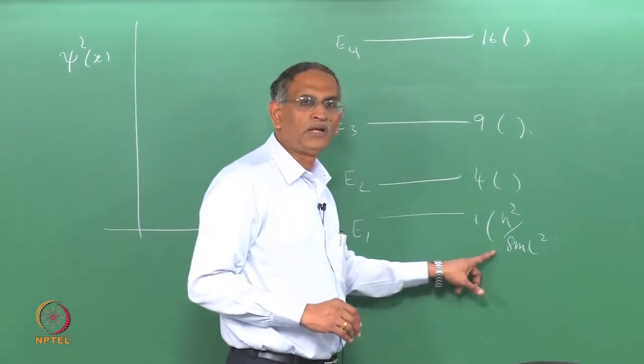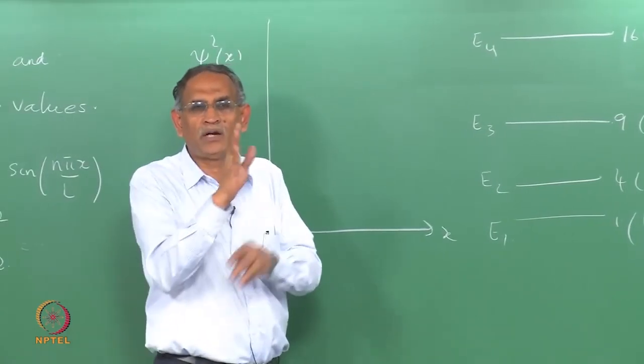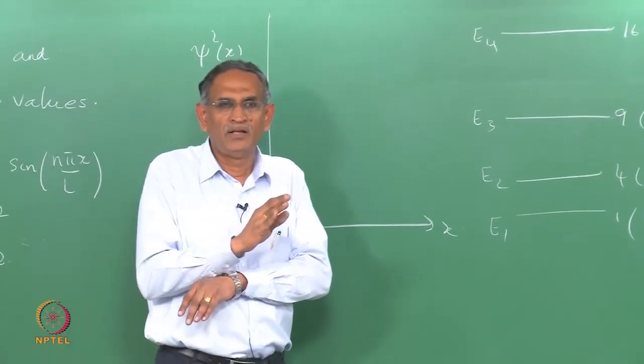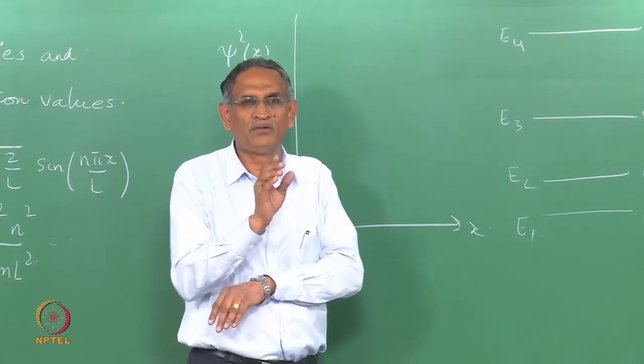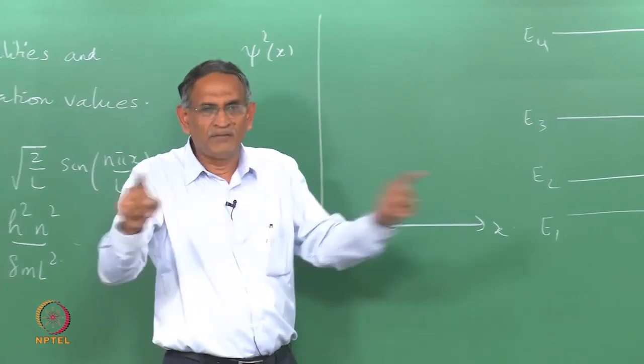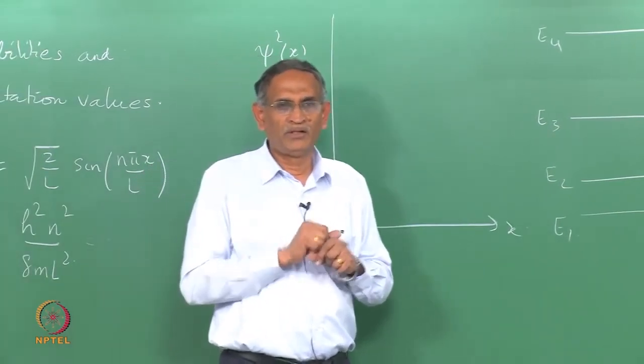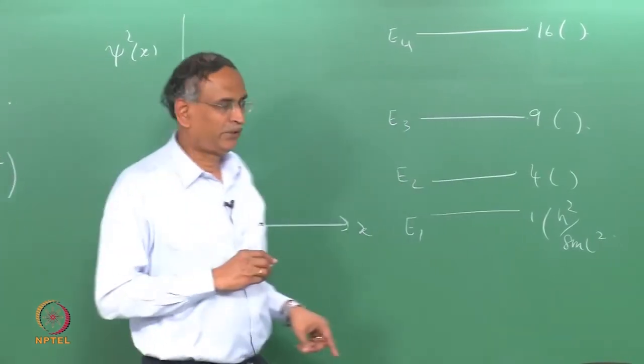But you can also see the following, namely as you increase these energies the probabilities of finding the particle in any given region more or less approaches a constant value which is proportional to the extent of that region divided by the total length of that region for very very large values of n. That is a classical limit.